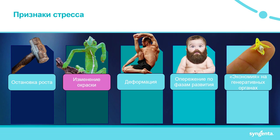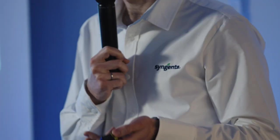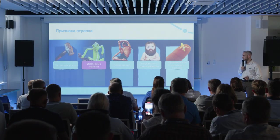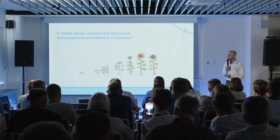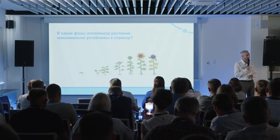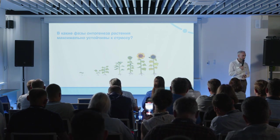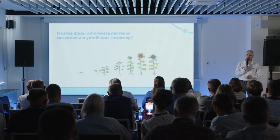The plant strives to move faster from one development phase to another. The last sign is what I'd call 'economizing on generative organs' — fewer are formed overall. For grain crops, the ear is smaller, contains fewer spikelets, fewer grains, and they are less filled. This is all what we need to fight, because our task is to obtain the maximum yield over a relatively short growing season.